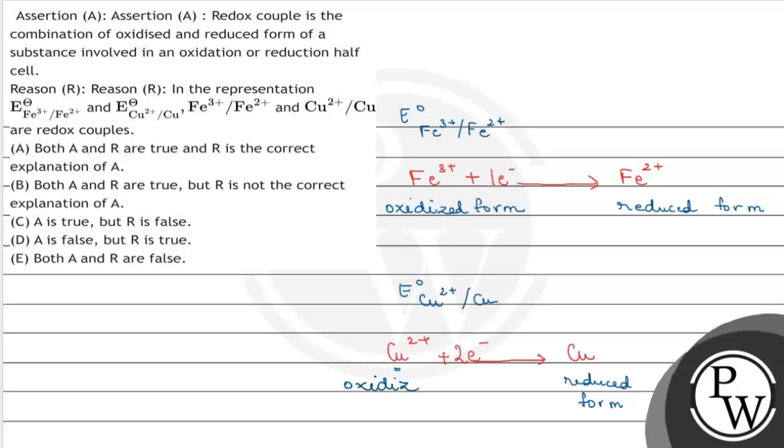That means the reason which says in the representation E0 for Fe3+ Fe2+ and E0 for Cu2+ and copper, Fe3+ ions, Fe2+ ions, and Cu2+ and Cu are redox couples. So this statement is also correct. Okay, so we can say that both A and R are true and R is the correct explanation of A. So option number one is correct.